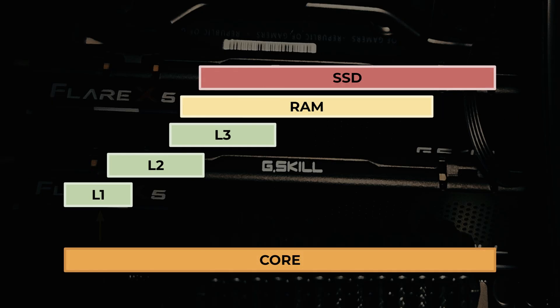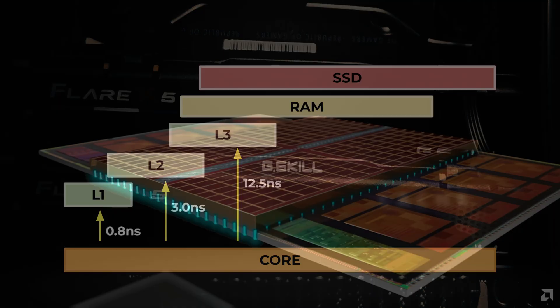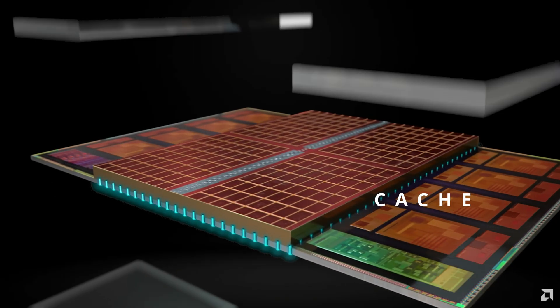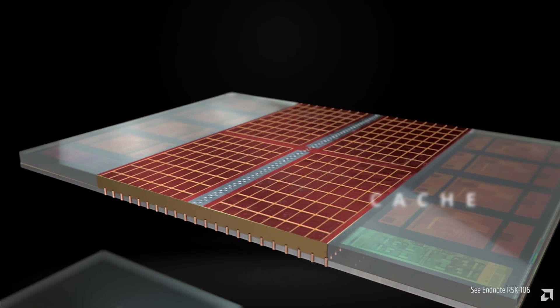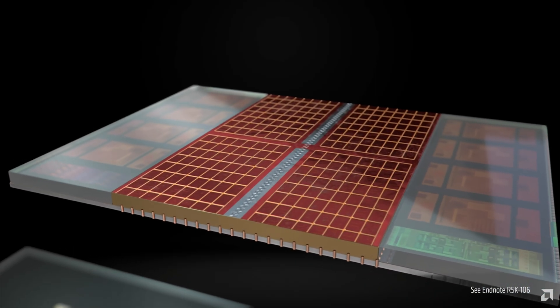The CPU cores execute instructions, but to do their job they always need data, and the CPU really prefers to have that data ready as quickly as possible. That's why it first checks the cache — tiny but extremely fast memory blocks inside the CPU.